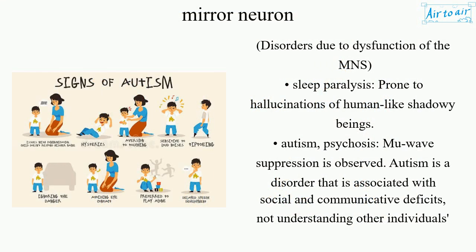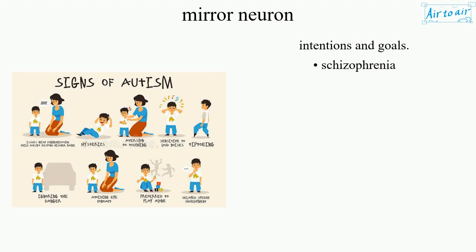Disorders due to dysfunction of the MNS: sleep paralysis, prone to hallucinations of human-like shadowy beings; autism; psychosis. Mu wave suppression is observed. Autism is a disorder associated with social and communicative deficits, not understanding other individuals' intentions, emotions, and goals. Schizophrenia.